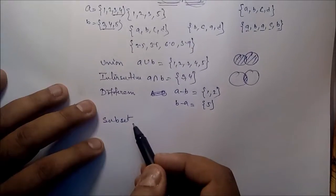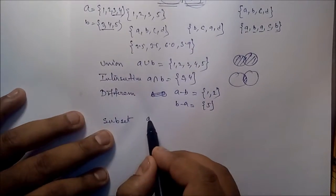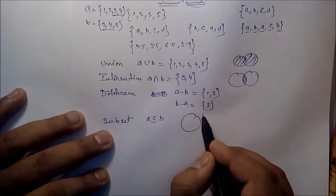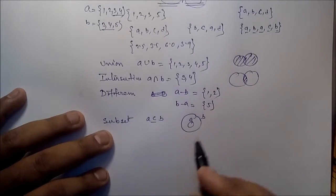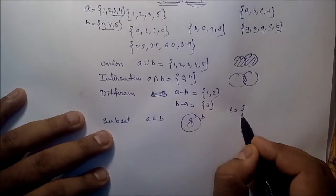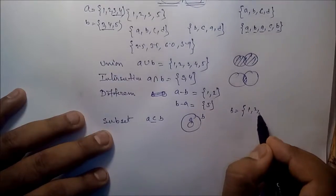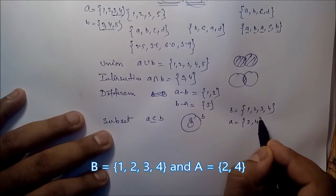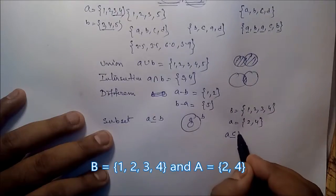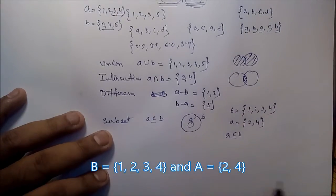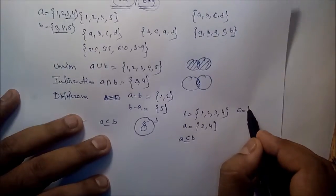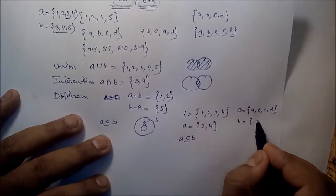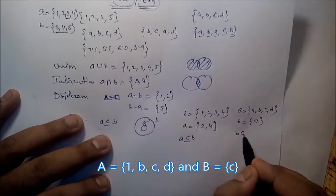Subset: if A is a subset of B, then B is the bigger set and A is the smaller set. For example, if B = {1, 2, 3, 4} and A = {2, 4}, then A is a subset of B. Similarly, if A = {a, b, c, d} and B = {c}, then B is a subset of A.